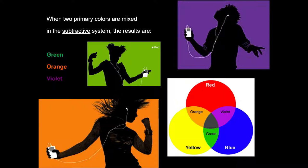When two primary colors are mixed in the subtractive system, the results are secondary colors — green, orange, and violet. You can see here this little Venn diagram that shows that red and yellow mix to create orange, yellow and blue to create green, and red and blue to create violet. You're very likely familiar with these mixing principles from your elementary school use of watercolors and poster paints.